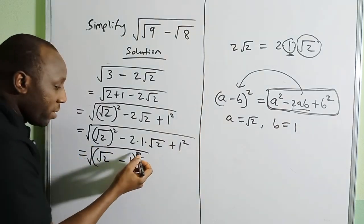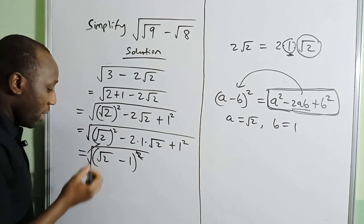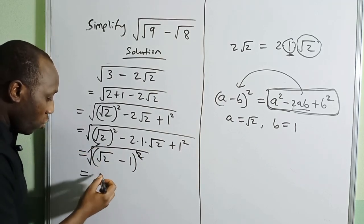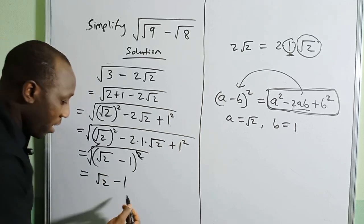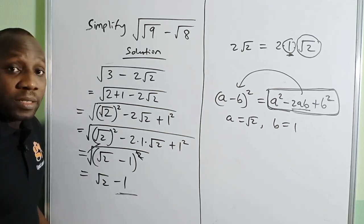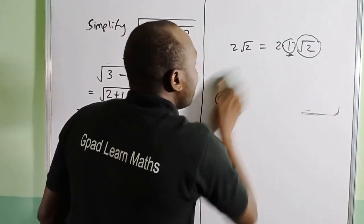The square cancels the square root, which leaves us with √2 - 1. So this is your final answer.